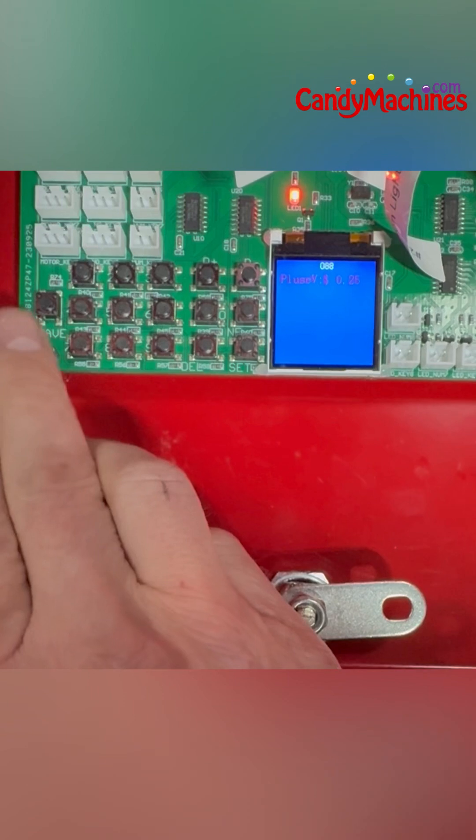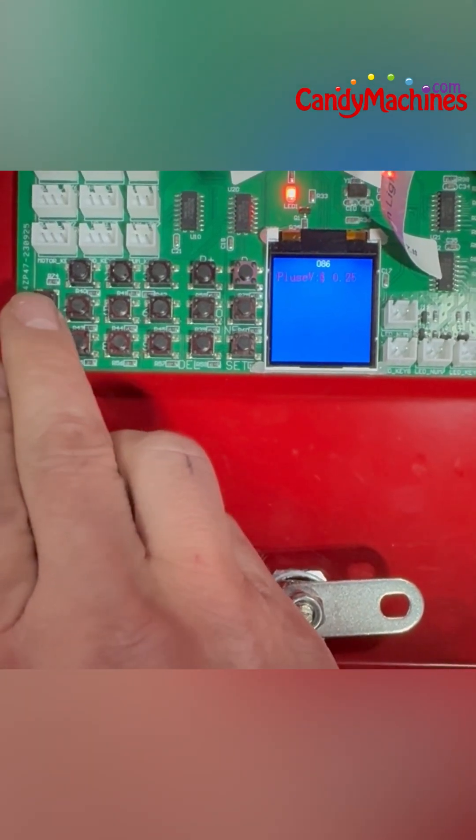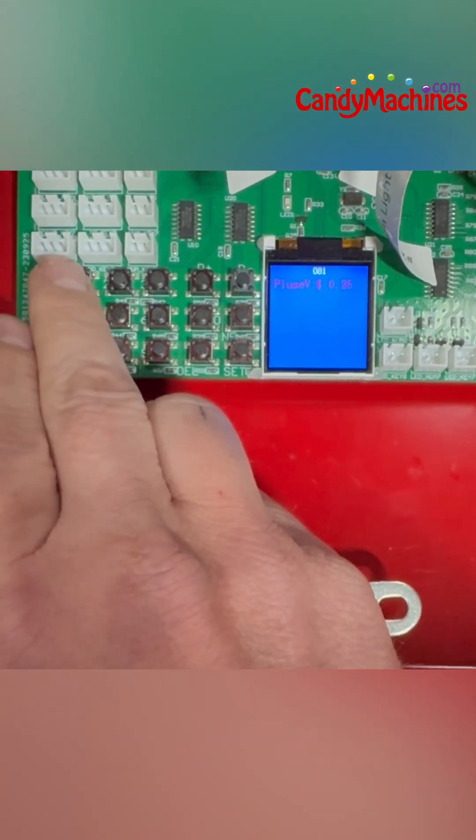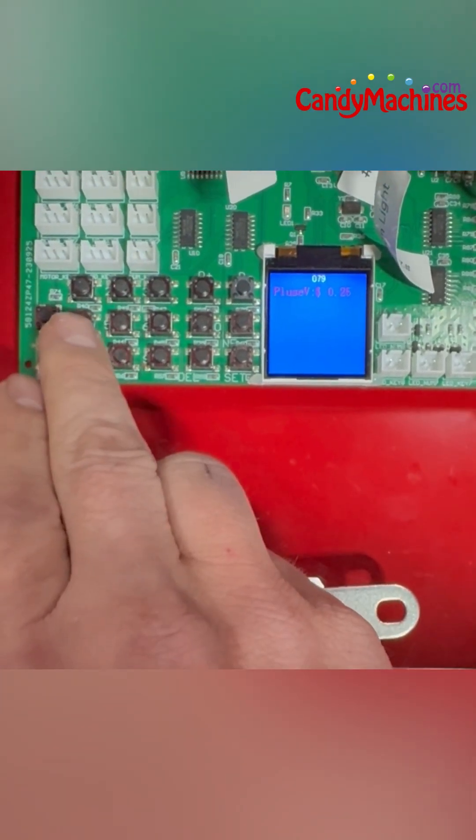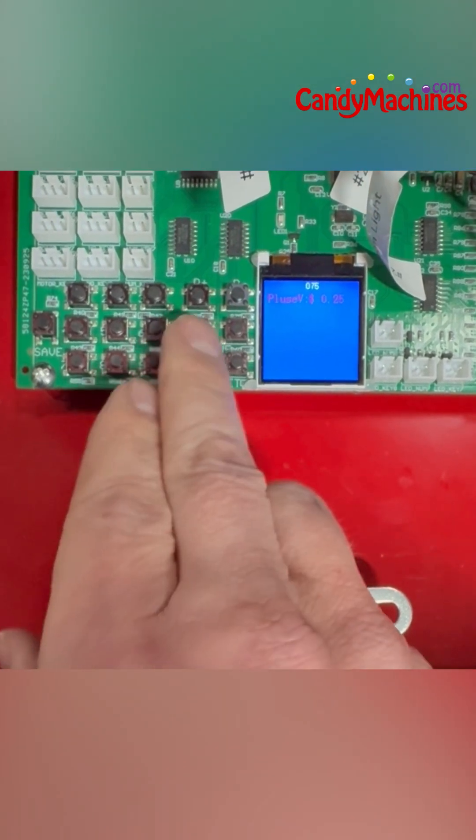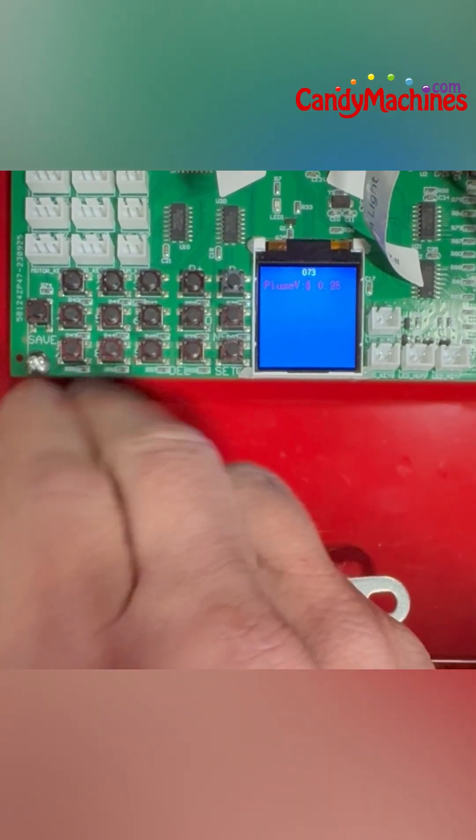But the basic navigation here, you've got a save button, and then you've got your numbers, so if you were to set your pricing, you'd use the numbers. So you've got 1, 2, 3, 4, 5, 6, 7, 8, 9, and 0 over here in the middle.